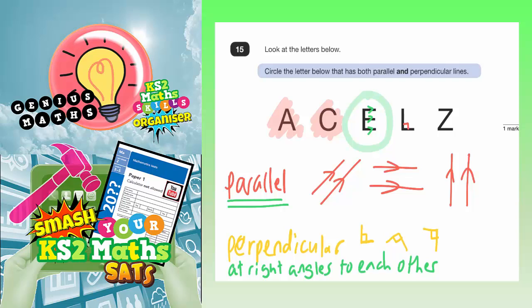They are not pointing in the same direction. So there are perpendicular lines on letter L but there are no parallel lines on letter L. So that one we don't want — it can't be letter L.